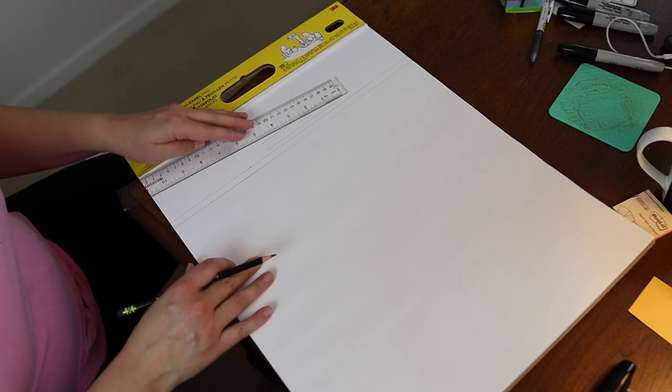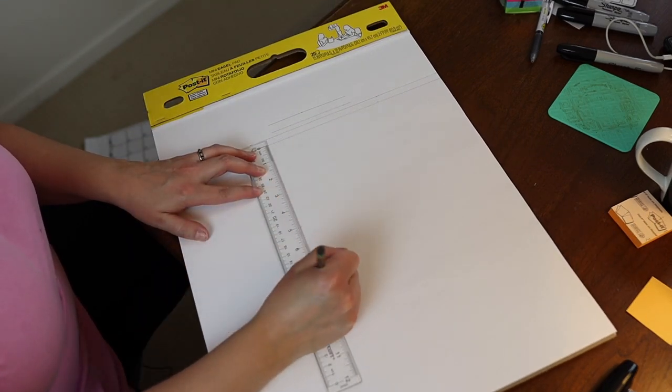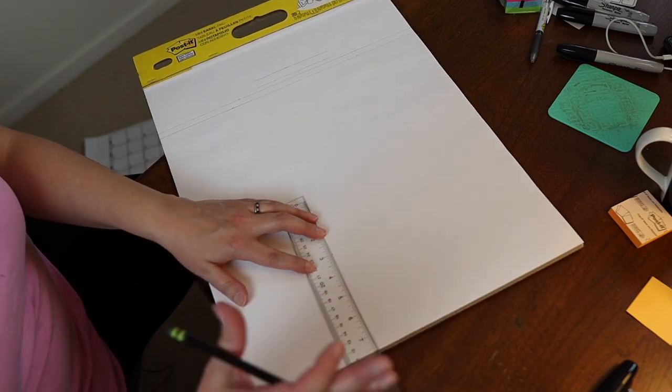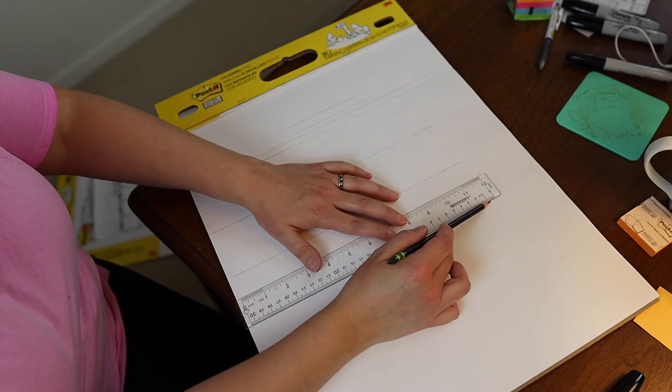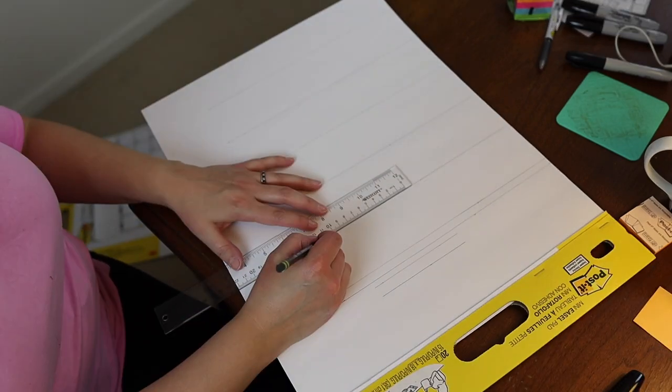I'm not a super perfectionist about this. Now we're going to do the grid down. These are going to be two and a half inches, so we should be able to get five rows here in our calendar.